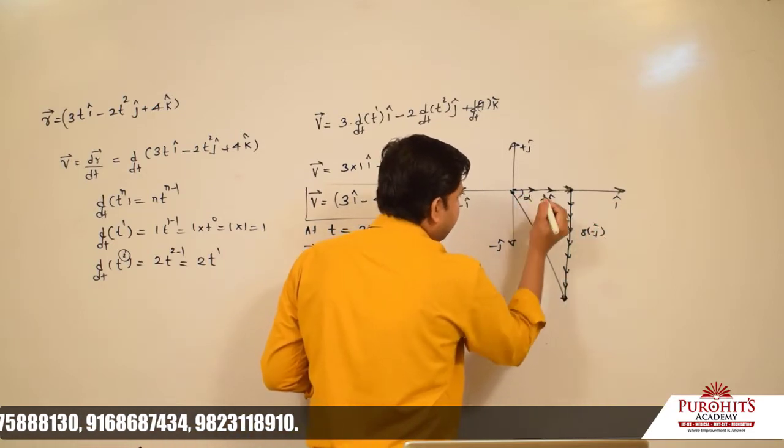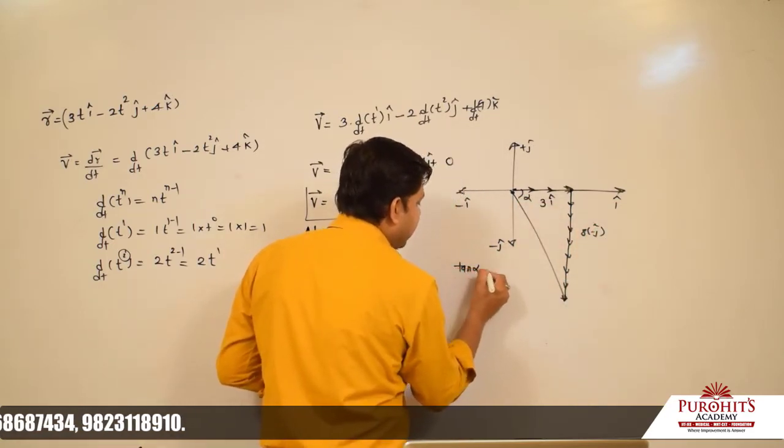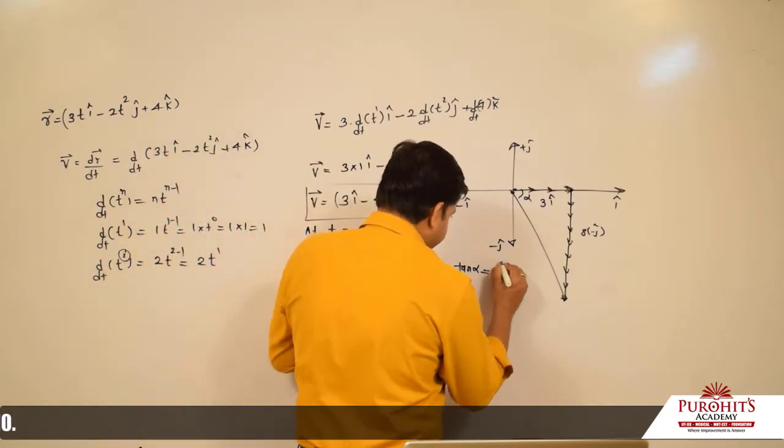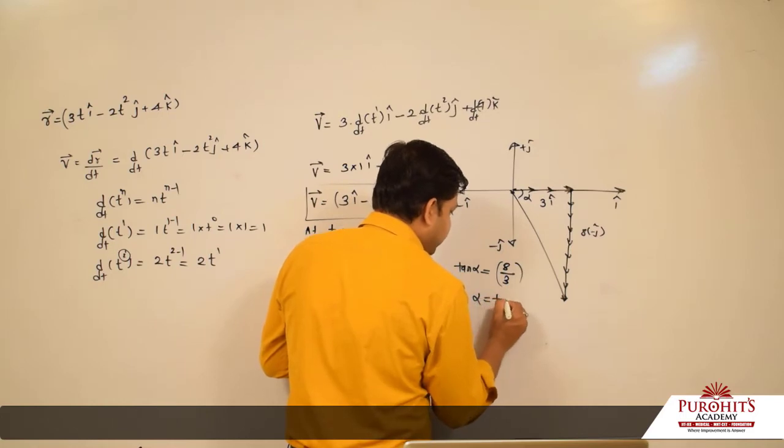Now if we want to find the angle alpha, that will become perpendicular upon base: tan α = 8/3, so α = tan⁻¹(8/3). This is how it can be calculated.